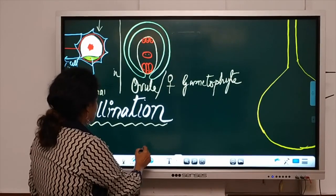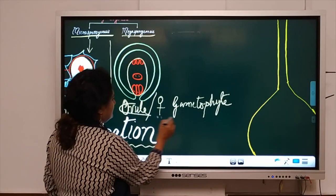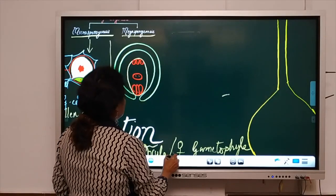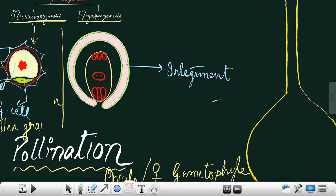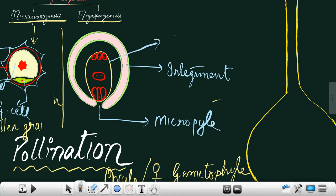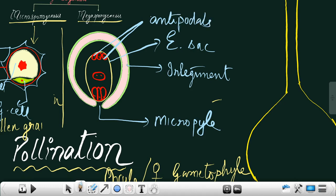Now, the female gametophyte is called the embryo sac. The outer covering is the integument, and there is a gap at one end called the micropyle. The yellow sac is the embryo sac. Within the embryo sac there are seven cells: three cells called the antipodals, cells at the base together called the egg apparatus, and the cell at the center called the central cell.